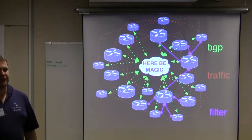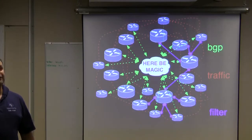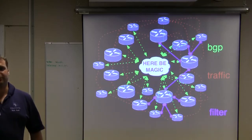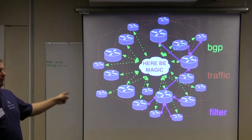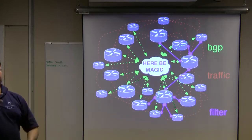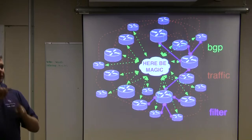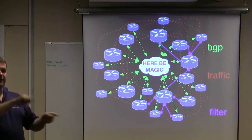Advanced route servers allow for filtering between the members. So if you don't connect to the route server because you don't want to leak your prefixes to your transit customers, you're able to configure filters between members so that traffic doesn't flow between members, despite the fact that all members might have a session to the route server.